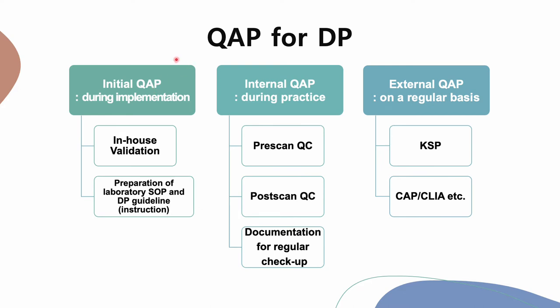A Quality Assurance Program for digital pathology consists of initial QAP during implementation, internal QAP during practice, and external QAP on a regular basis. During implementation of new equipment such as scanner, monitor, server, or image viewer within a digital pathology system, in-house validation should be performed and laboratory standard operating procedures for the equipment and DP guidelines should be prepared. It is important to remember that validation should be performed on the whole digital pathology system, even if you introduce just one new piece of equipment such as a new scanner model.